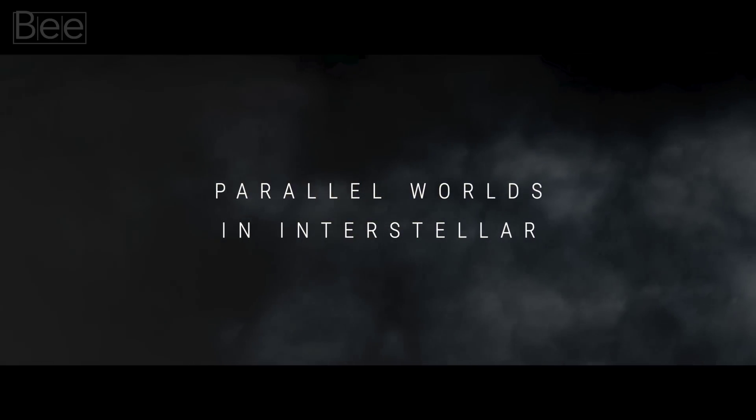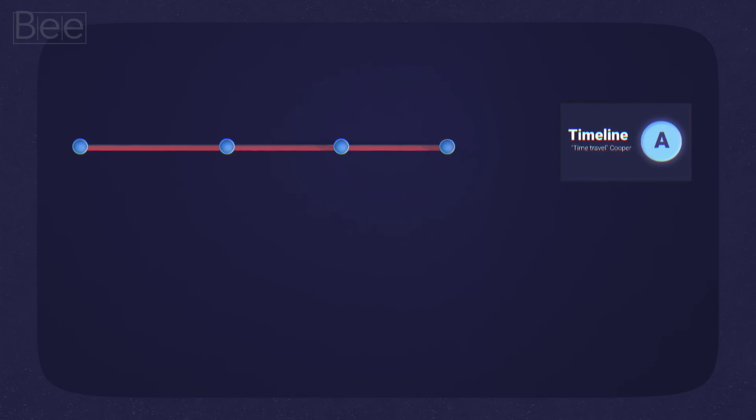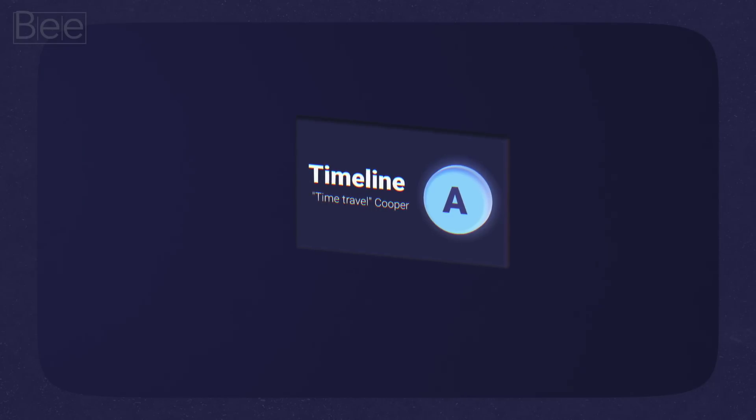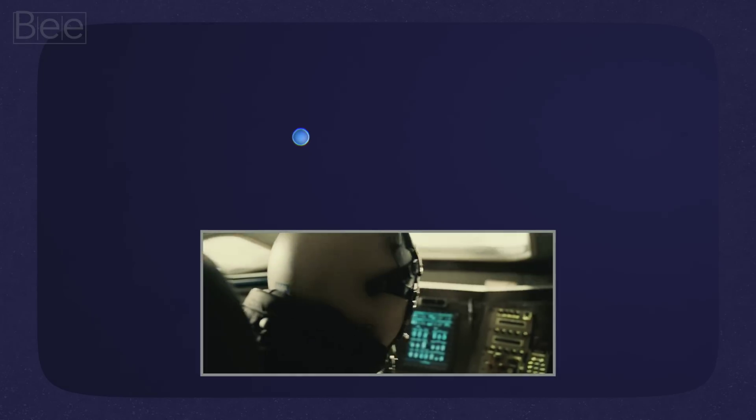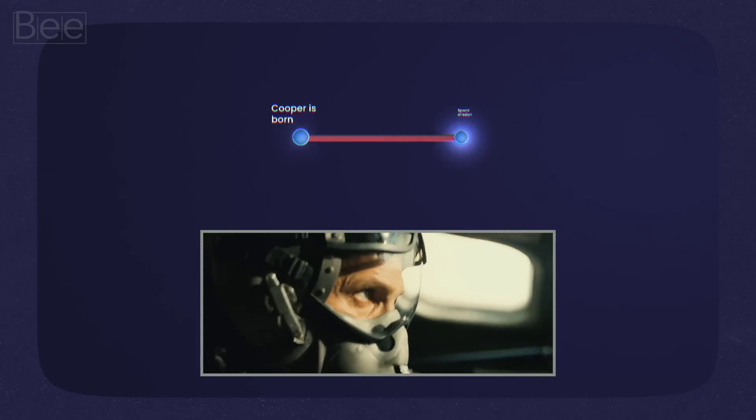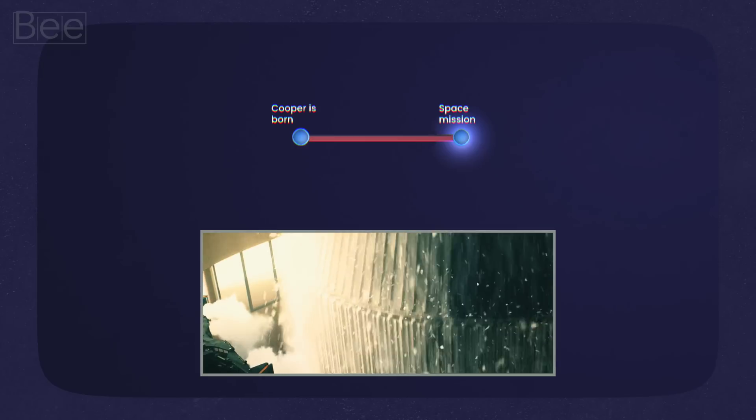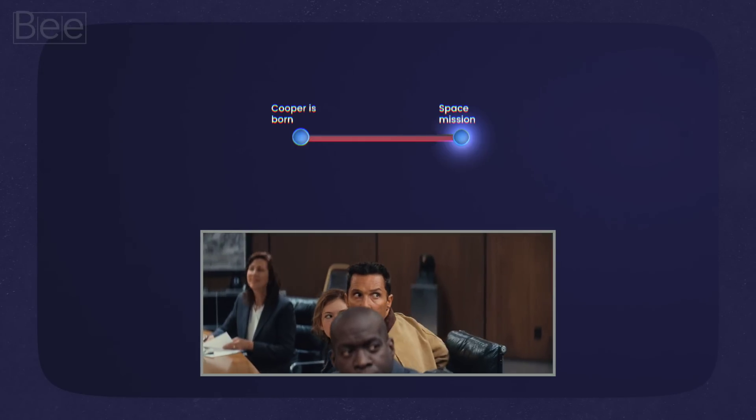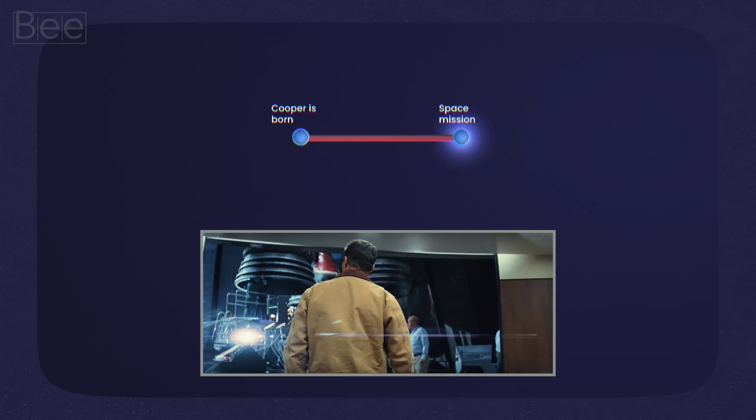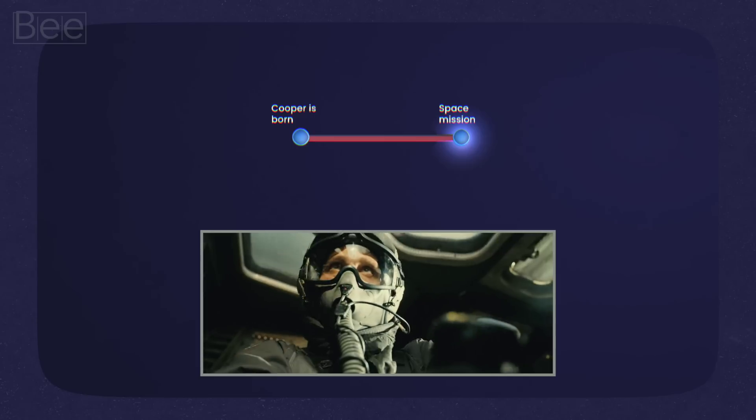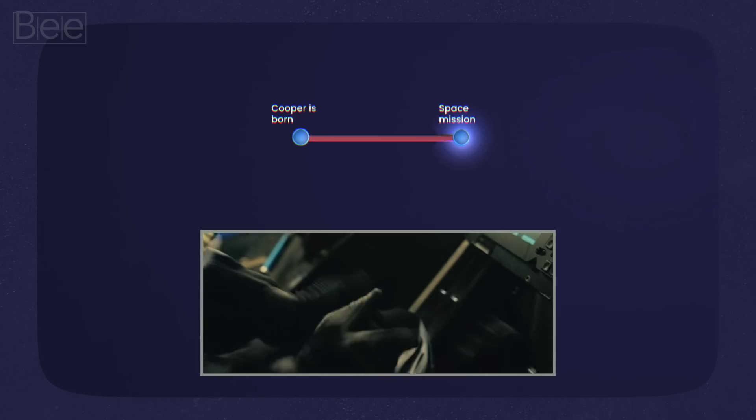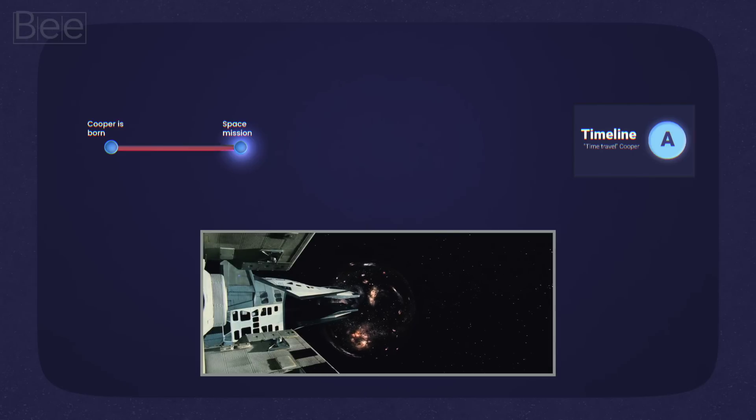Now that we have explored this concept from a physics point of view, let's observe how it plays out in the movie. First, we have the origin timeline, what I would call timeline A. It's simply a timeline where the time travel Cooper exists. So in this timeline, we see the upbringing of Cooper as a space pilot. And then he's engaged in some kind of space mission. It could be that it's the same mission as we see in the movie or perhaps a totally different one. Because we know that Cooper is a former trained as a pilot, right? Anyhow, my point being, he's on a space mission.